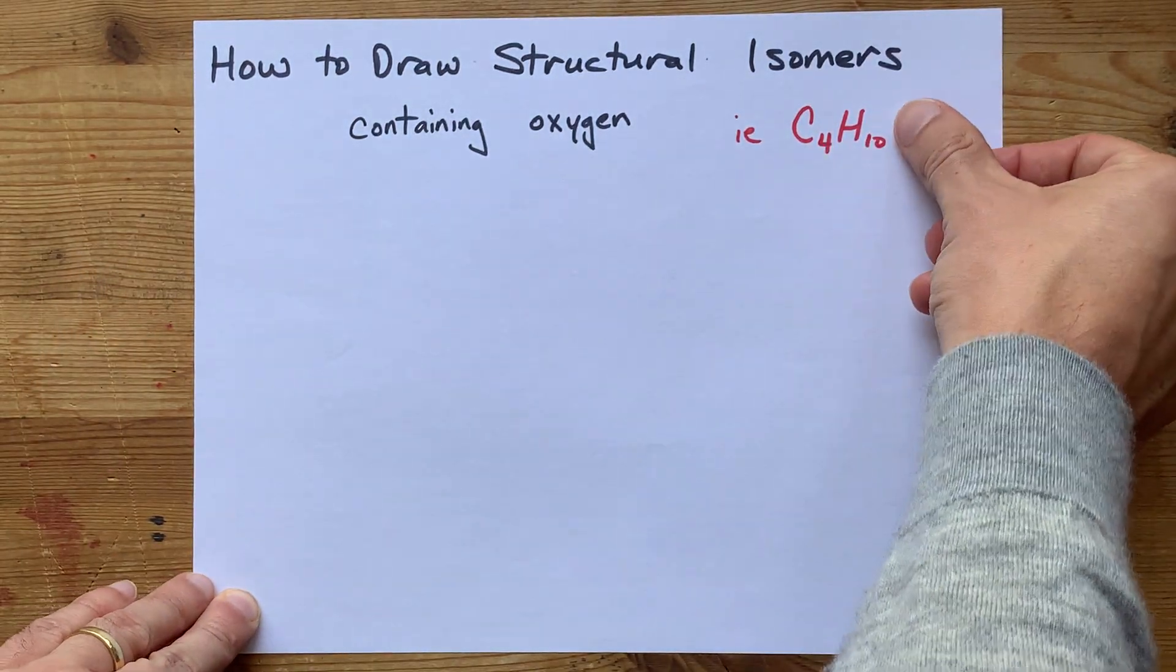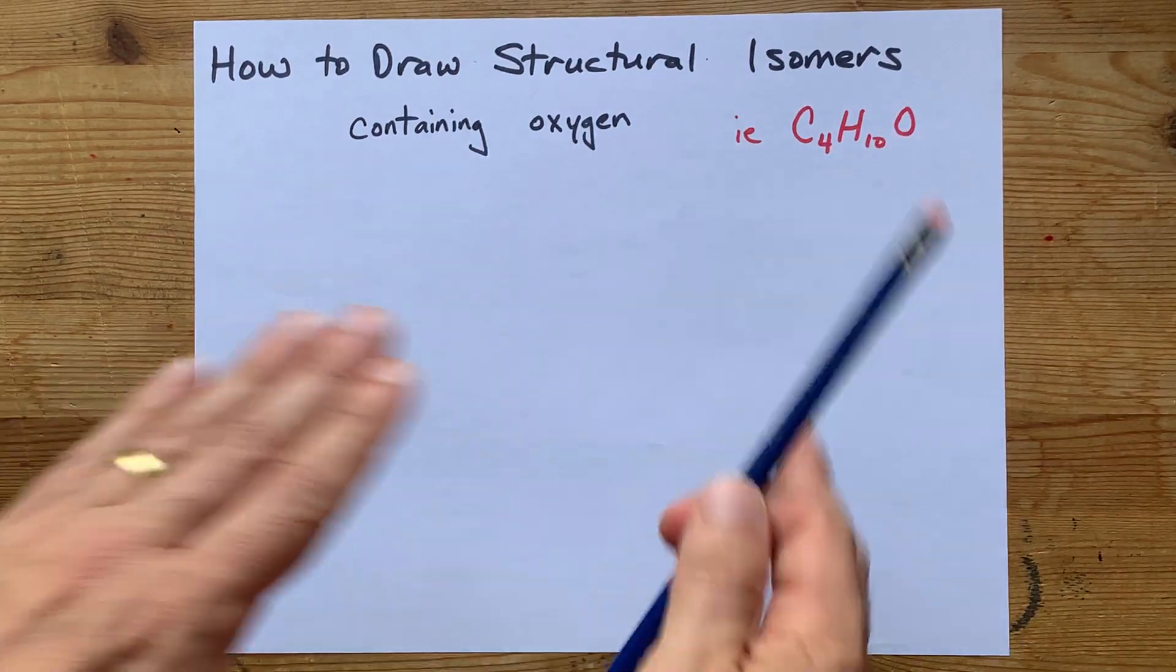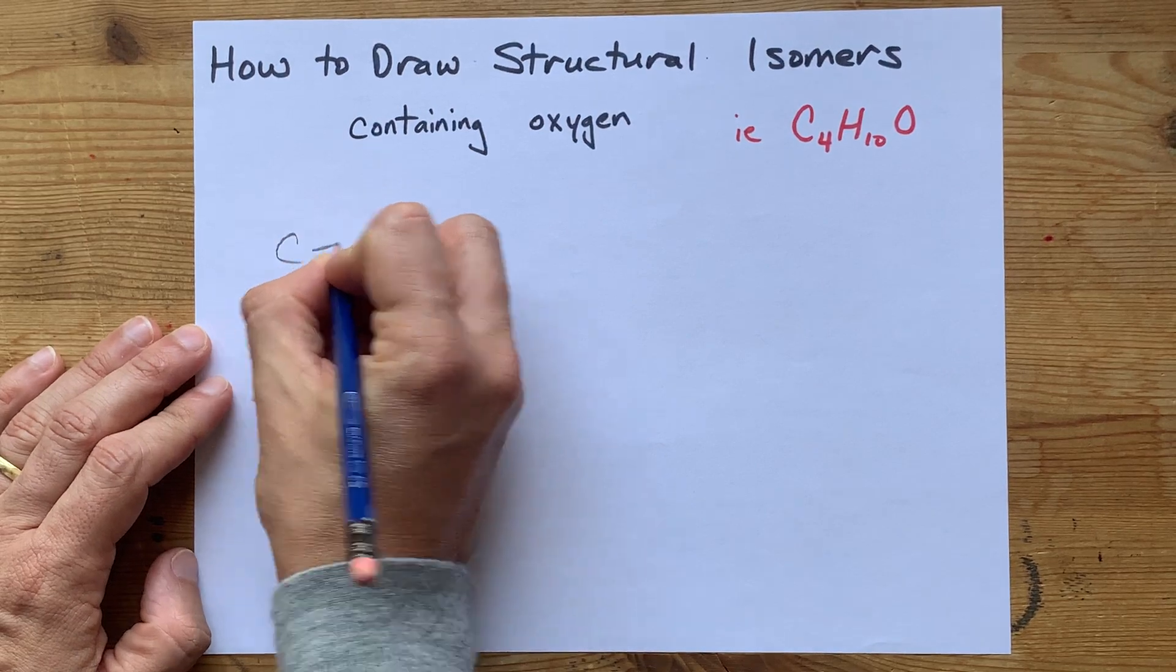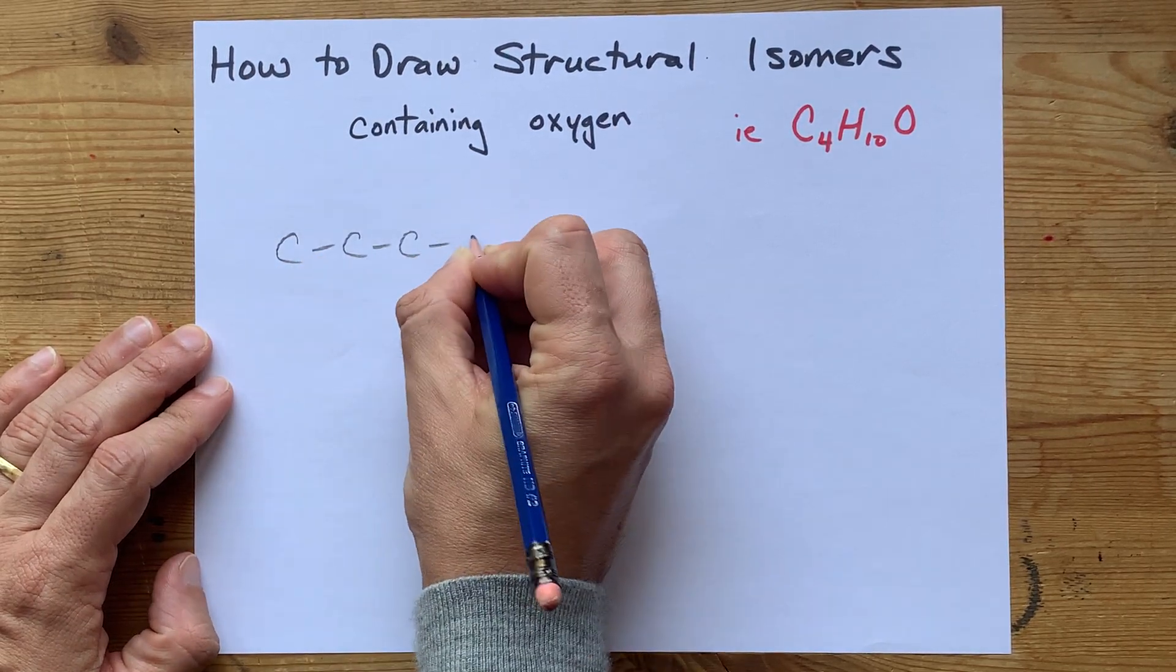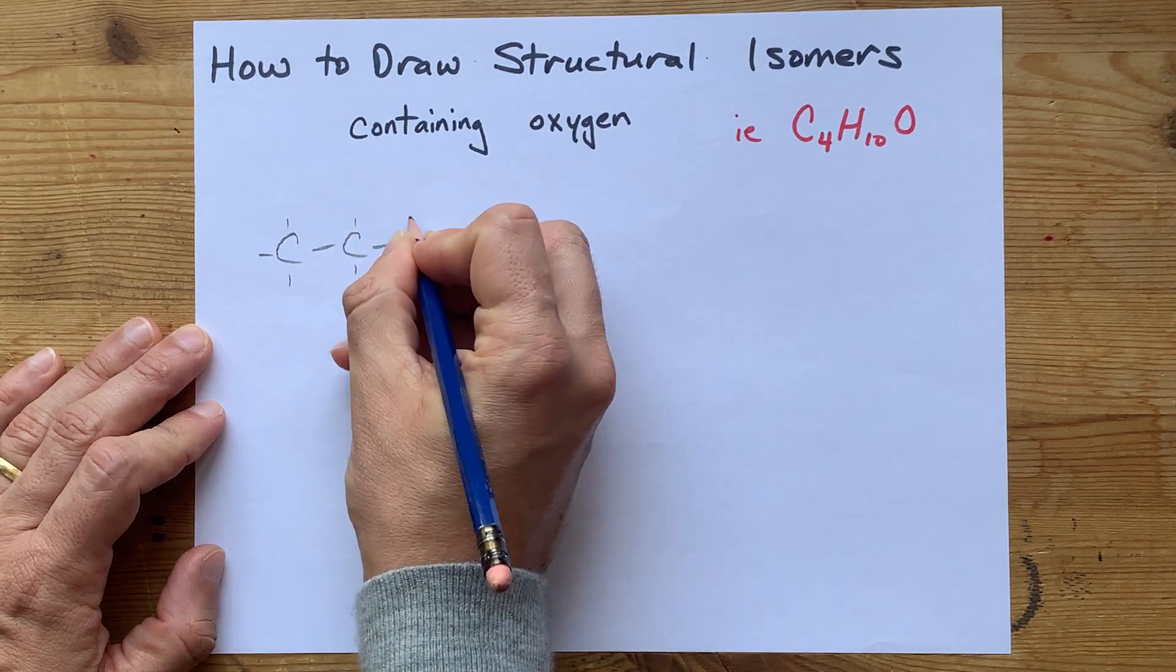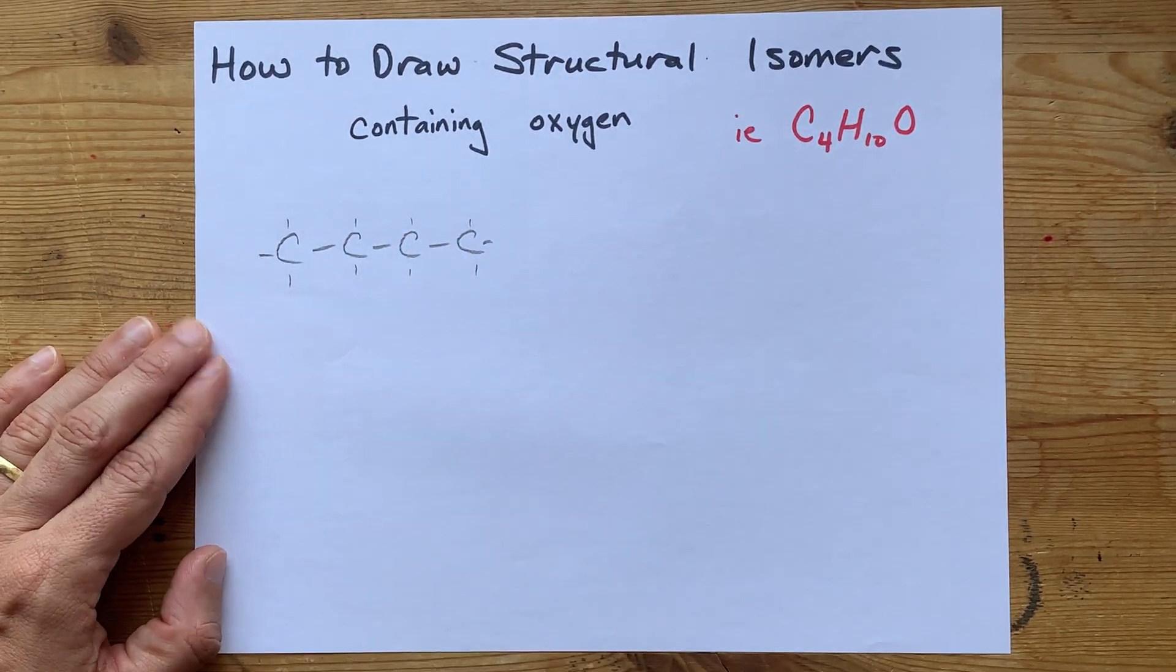Let's start with C4H10. What are the structural isomers for just that? Well, one of them is just all four carbons in a row. This is butane. Counting 1, 2, 3, 4 carbons and 10 hydrogens. Great.